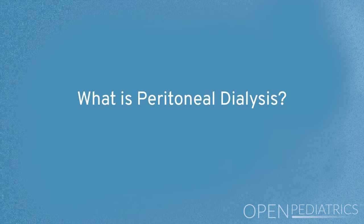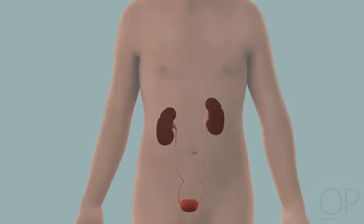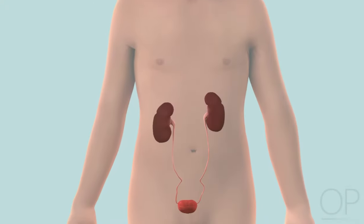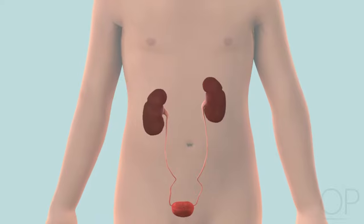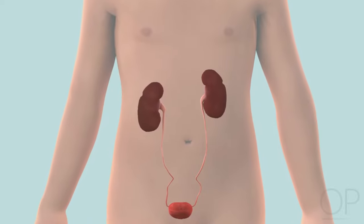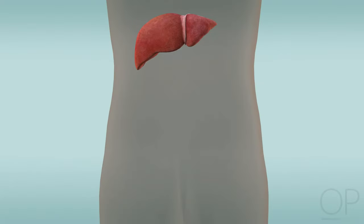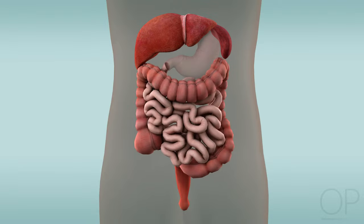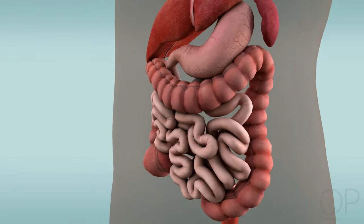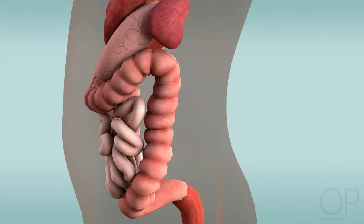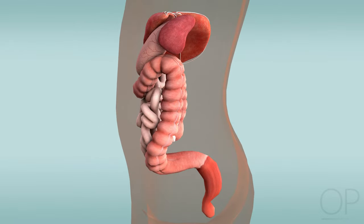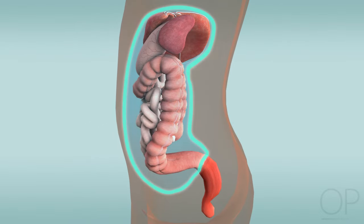What is peritoneal dialysis? Inside your child's belly, also called the abdomen, there are organs just like the kidneys, the liver, the spleen, the intestines, and others. Here's your abdomen. Inside of the abdomen is covered in a thin lining or membrane, which is called the peritoneum. This is where peritoneal dialysis gets its name.